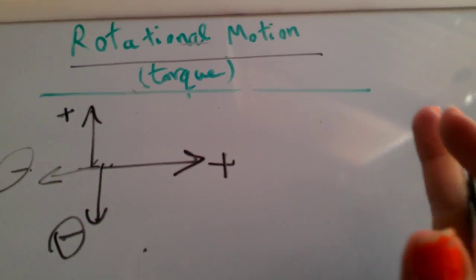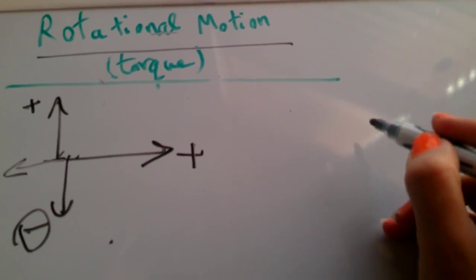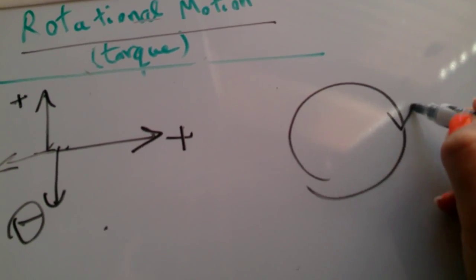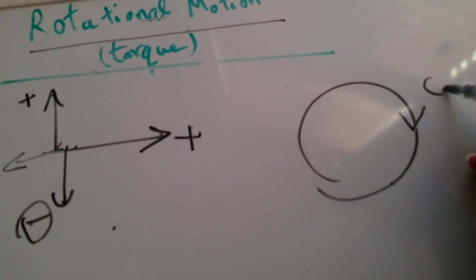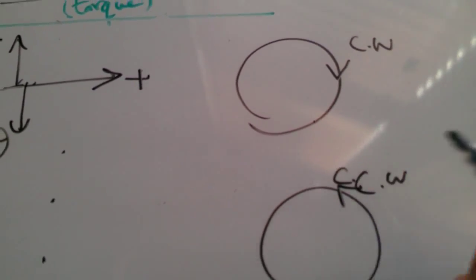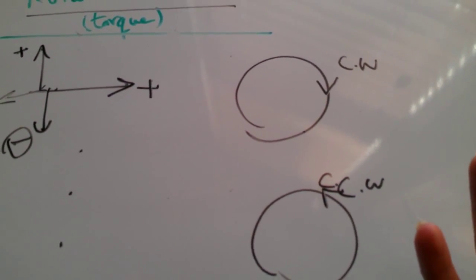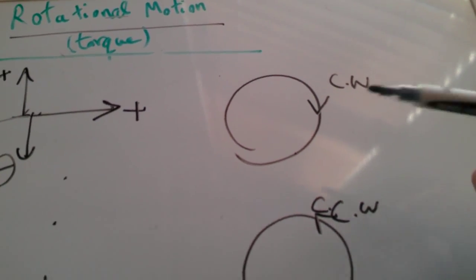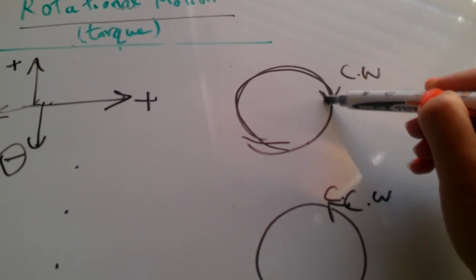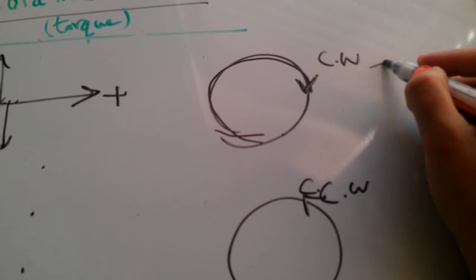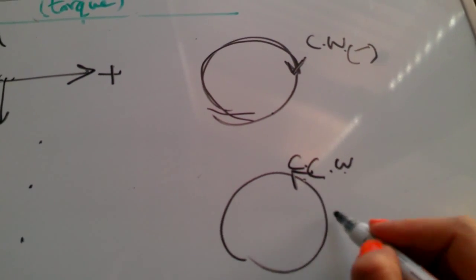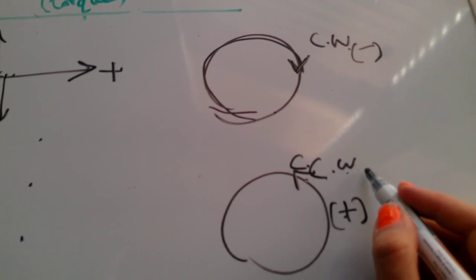Exactly the same thing happens in rotational motion. The nature of rotational motion is rotation either clockwise or counterclockwise, right? We don't have anything in between or anything like that. Conventionally, we use negative sign for clockwise rotations and positive for counterclockwise rotation.